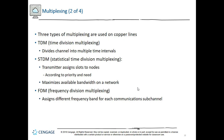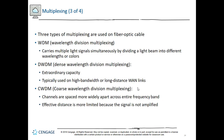Frequency division multiplexing (FDM) assigns different frequencies to create multiple frequency bands, each used by a subchannel, so multiple signals can be transmitted simultaneously on one line. Signals are modulated into different frequencies and multiplexed onto the channel. At the receiving end, a demultiplexer breaks the signals back apart and parses them out to their destinations.